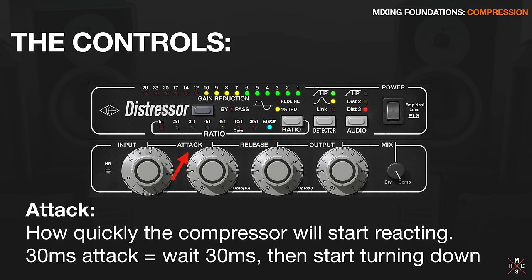Here's where we really start getting into the magic and the power of compression. When you let more transient through and then compress, what our ears actually hear is that you've emphasized the transient. That's because relative to the rest of the signal, the transient is now louder. So that's why a slow attack on a compressor will make a snare drum or any type of drum sound more punchy - it's emphasized that transient by letting some through and then compressing the signal.